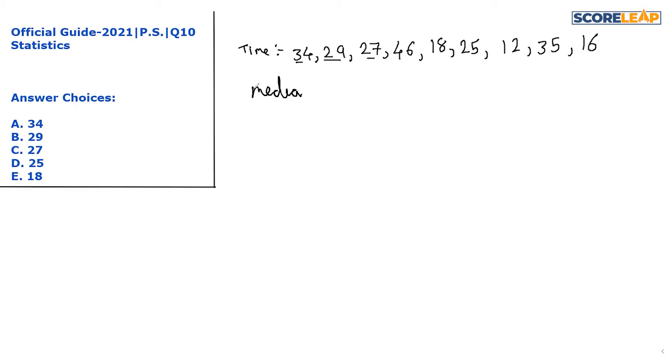Whenever we are asked to find out the median, we have to arrange all the terms in ascending order. So the lowest term is 12 minutes, then the second lowest will be 16, then 18, then 25, then 27...